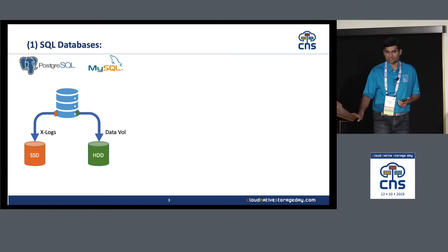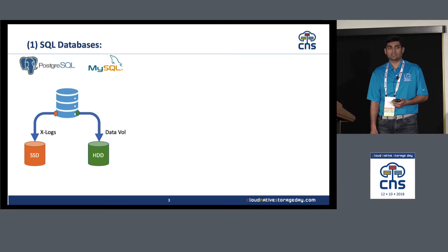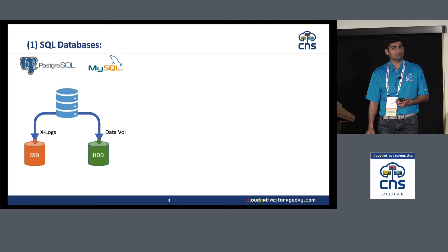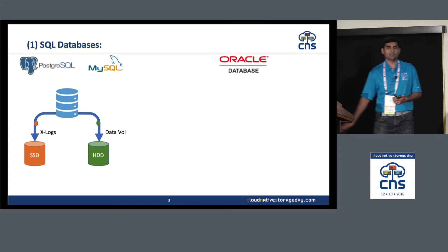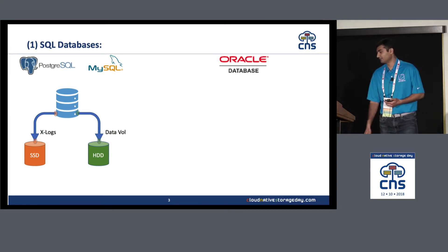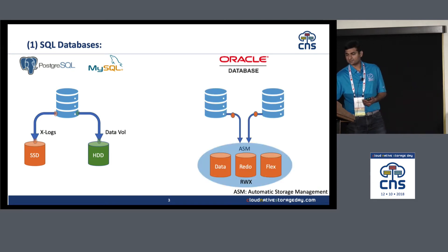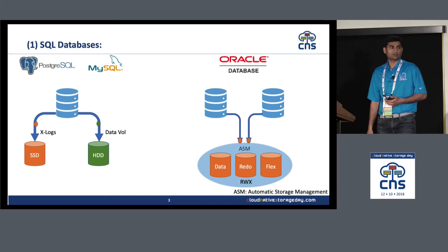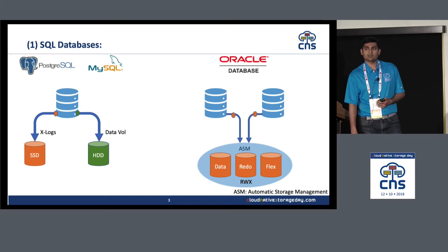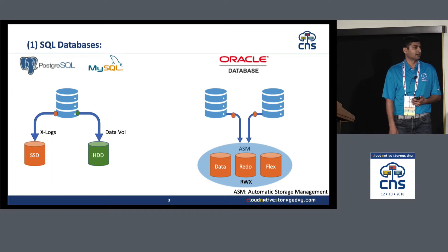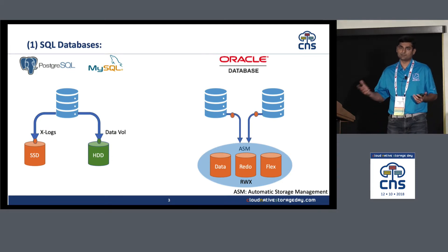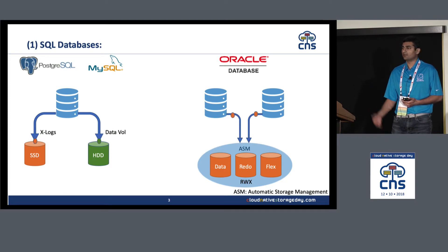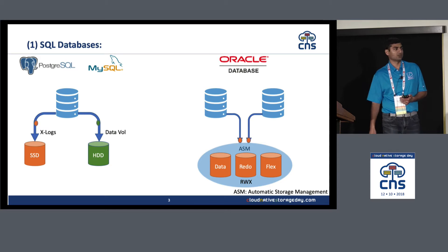Now a trivia question: what database is deployed most in the world today in production? Oracle. Oracle has been deployed widely in production all over the world. Especially Oracle RAC — it has its own Automatic Storage Manager, ASM. The requirement is that it needs raw volumes, and these volumes need to be accessible across multiple nodes. In Kubernetes terms, that's called RWX — Read-Write-Many — so we need to make sure the volume is Read-Write-Many capable.